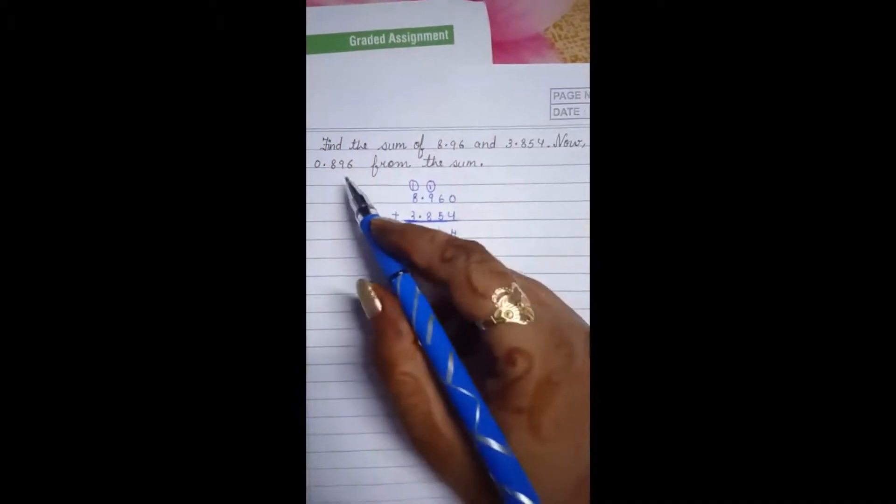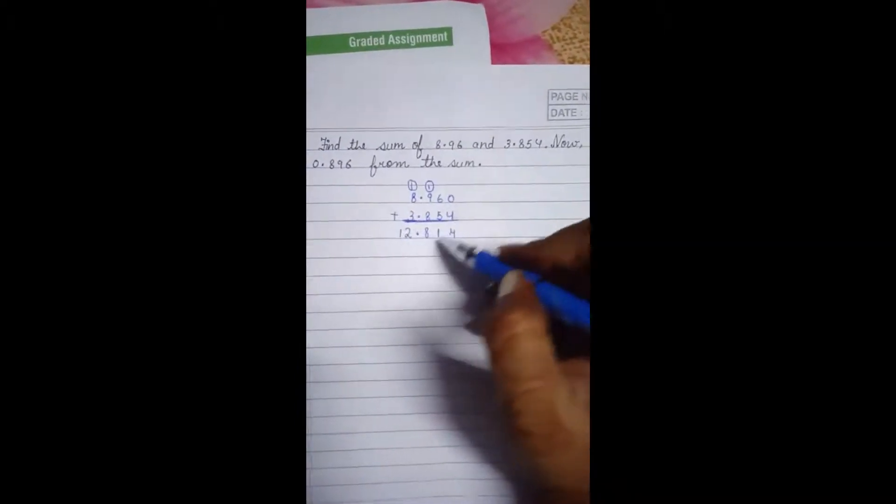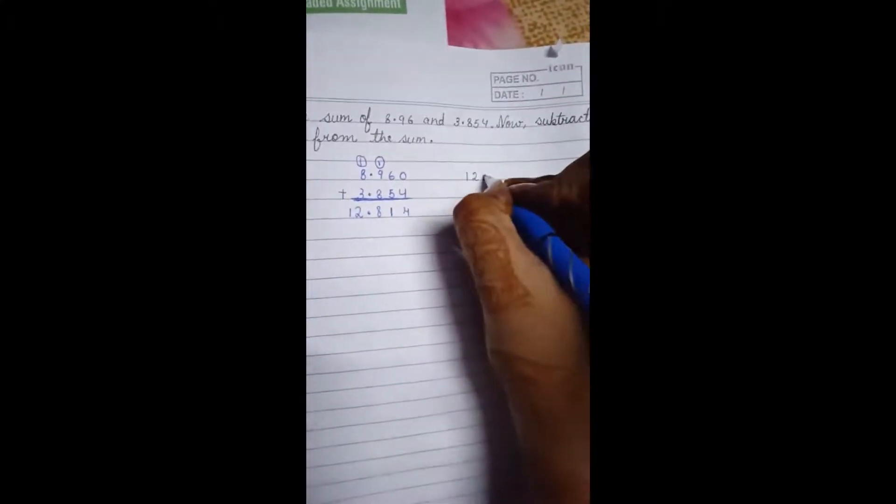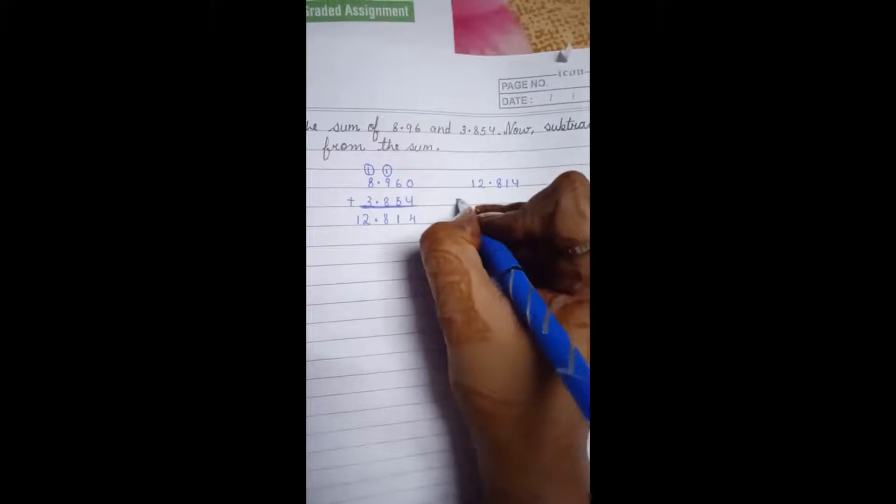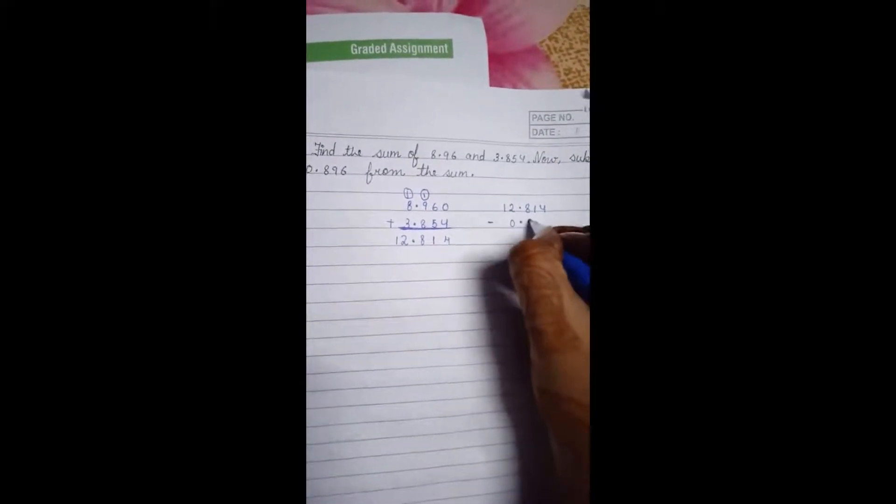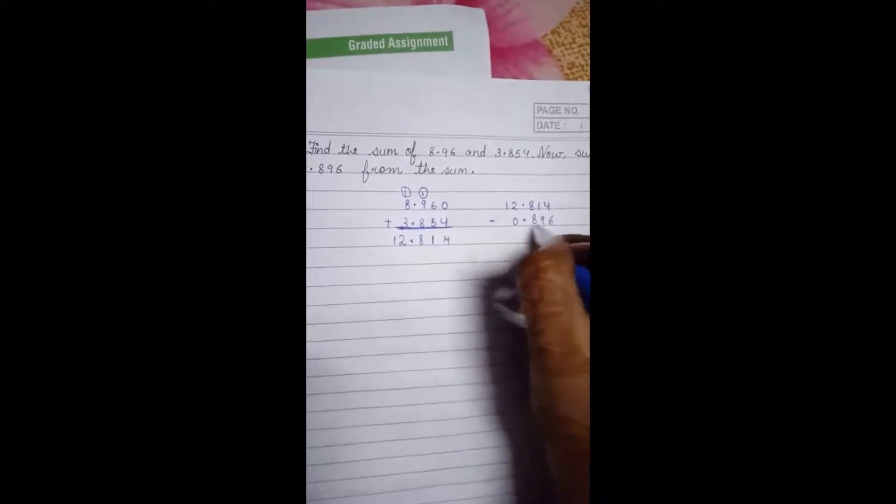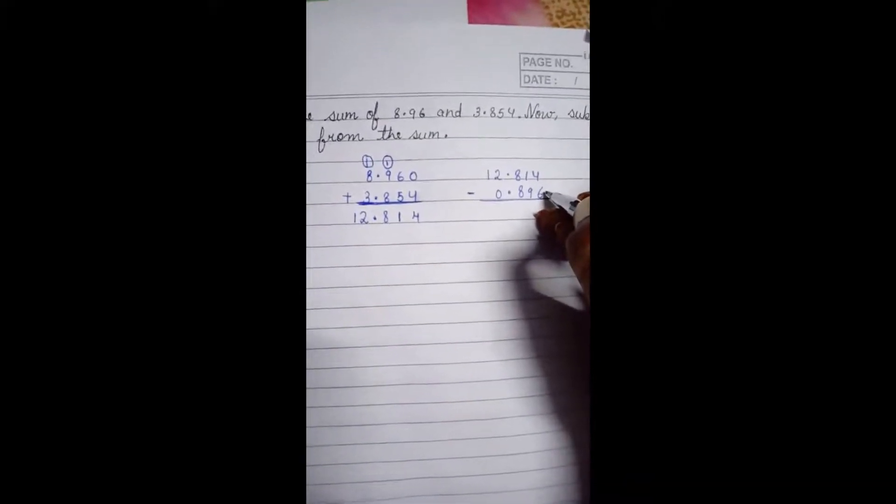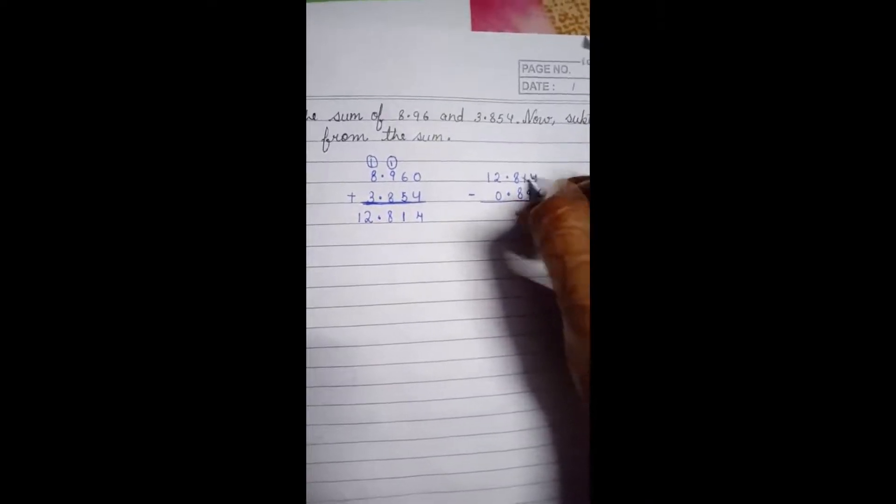Now we have to subtract 0.896 from this sum. So let us arrange them. 12.814 minus 0.896. Let us start subtracting.